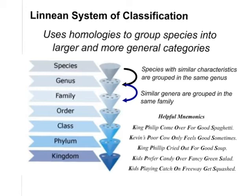So let's take a look at what this system was. I'm guessing you recognize a lot of this: kingdom, phylum, class, order, family, genus, species — you've probably been introduced to that several times. Just make sure you know these and know the order they are presented in. The Linnaean system of classification used homologies to group species into larger and more general categories. Species is the basic unit of biological classification.